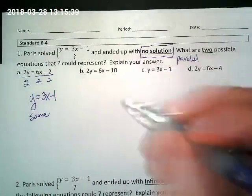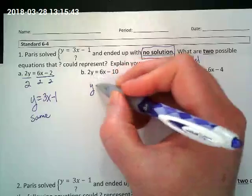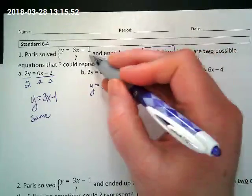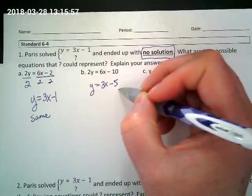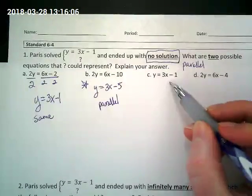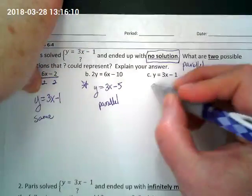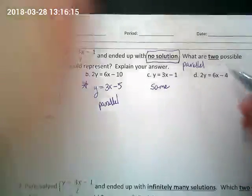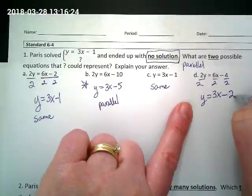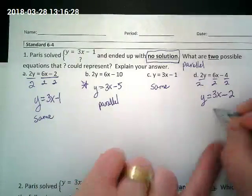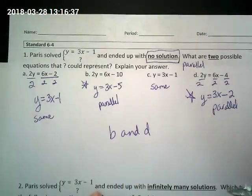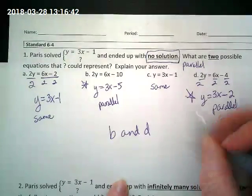The next one: y divided by two is y, six x divided by two is three x, negative ten divided by two is negative five — so y equals three x minus five. Same slope, different y-intercept — that's parallel, so this could be one of my answers. Another one is already the same equation as the original, so it would give infinite solutions, not no solution. The last one divided by two gives y equals three x minus two — same slope, different y-intercept, another parallel line. So I answered b and d.